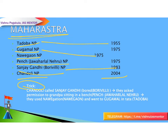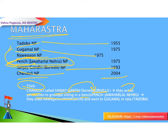The trick to remember is a story: Chandoli called his friend Sanjay Gandhi, who was bored at home — so remember Sanjay Gandhi Borivali National Park. Chandoli and Sanjay Gandhi then asked permission from their grandpa sitting on a bench — remember that as Pench. The grandpa on the bench is Jawaharlal Nehru, so Pench Jawaharlal Nehru. Then comes Navegaon, Gugamal, and Tadoba. So the story is: Chandoli, Sanjay Gandhi Borivali, Pench Jawaharlal Nehru, Navegaon, Gugamal, and Tadoba.